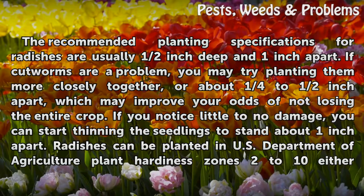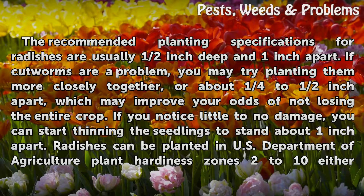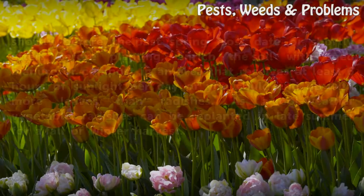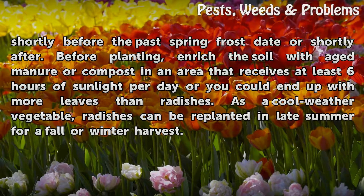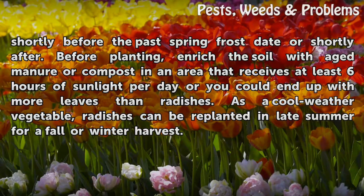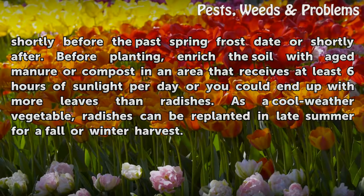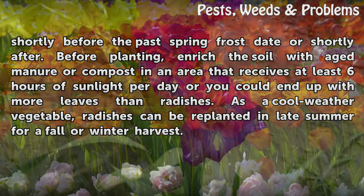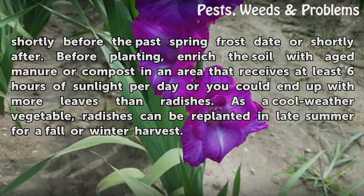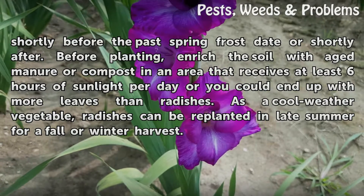Radishes can be planted in USDA Plant Hardiness Zones 2 to 10, either shortly before the last spring frost date or shortly after. Before planting, enrich the soil with aged manure or compost in an area that receives at least six hours of sunlight per day, or you could end up with more leaves than radishes. As a cool-weather vegetable, radishes can be replanted in late summer for a fall or winter harvest.